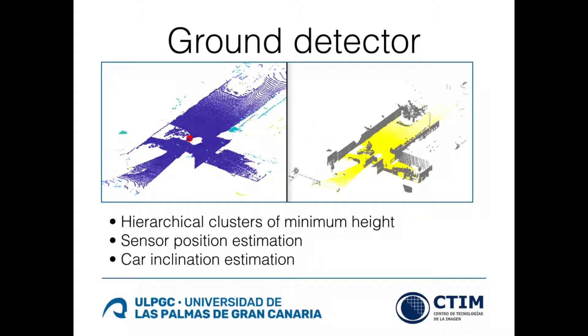In order to detect ground, minimum height and density grids are computed. Each cell corresponds to a square-meter area of the cloud. The cell with the larger density is used as an approximation to the car position. Points close to the minimum local height are clustered. By determining the inclination angle between the clustered centroids and the car position, it is possible to determine whether the cluster belongs to the ground. The inclination angle is compared with the estimated slope of the terrain.